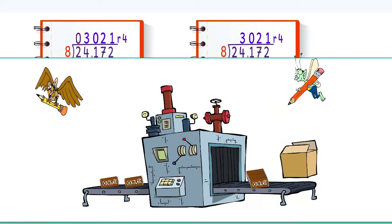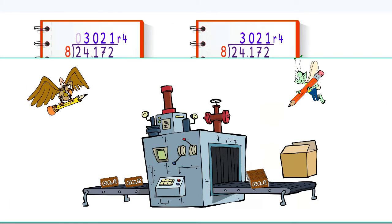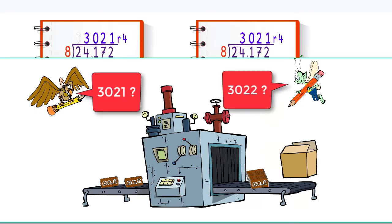Now, if we were solving this problem because we ran a chocolate bar factory, and we made twenty-four thousand one hundred seventy-two chocolate bars that needed to be packaged in groups of eight, would we have three thousand twenty-one or three thousand twenty-two packages? Since no one wants a package with only four bars in it, we would have three thousand twenty-one packages, and the last four bars would have to be saved for the next batch.